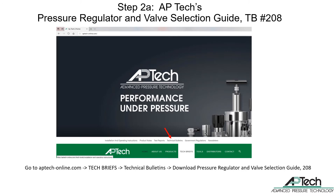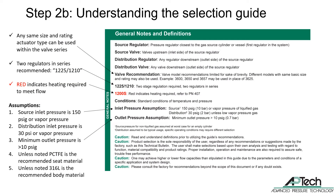Go to APTEC's Technical Bulletin section and download the pressure regulator and valve selection guide number 208. The regulator and valve selection guide includes the most common specialty gases used in semiconductor manufacturing. When using the guide, there are a few general notes and assumptions to understand. When a valve is recommended, it is limited to a single basic pneumatic and manual model. If two-stage regulation is recommended, the regulators will be listed and separated by a slash symbol. If the recommended regulator is printed in red, heating is required to meet the required flow rate.